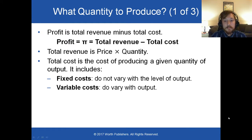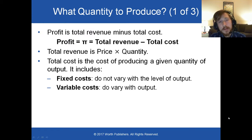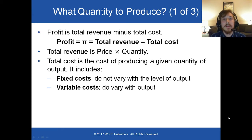What is profit? Again, we're talking about economic profit here. Economic profit is total revenue minus total cost, including implicit costs. Total revenue is price times quantity — the number of units you sell multiplied by how much money you sold each one for. If you sell more units at the same price, your total revenue increases. If you sell the same number of units at a higher price, your total revenue increases. Total cost is the cost of producing a given quantity of output. Total cost includes both fixed costs and variable costs.